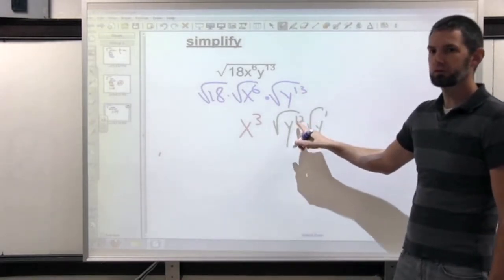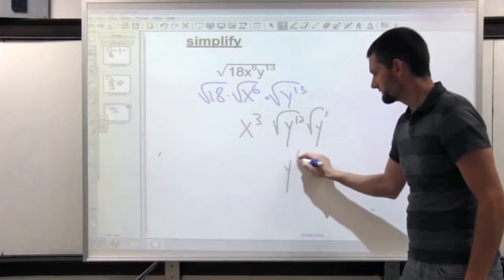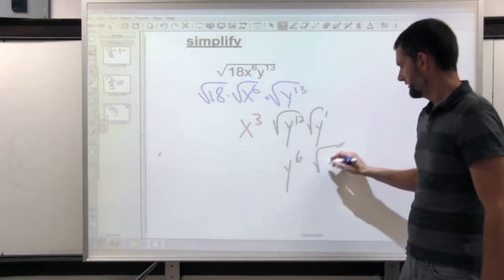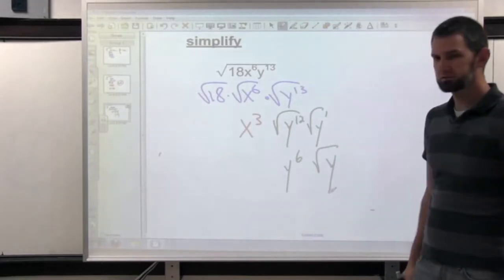Can I divide 12 by 2? Yes. That's y to the 6. And y to the 1 I can't because it's not squared. So that y to the 1 needs to stay inside.